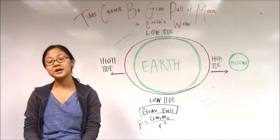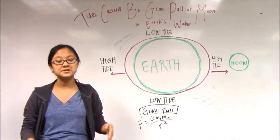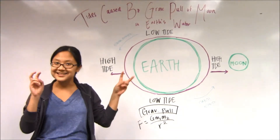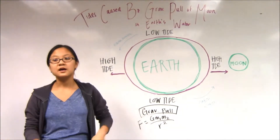Tides are caused by the gravitational pull of the Moon on the Earth's water. The gravitational pull of the Moon only pulls on the Earth's water because the Earth's water is not connected to its mass.